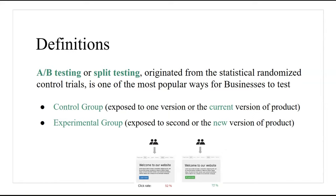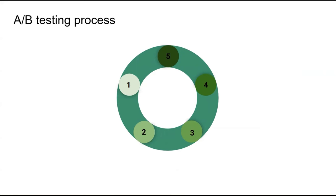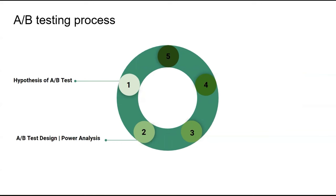Let's go through the steps included in the A/B testing process for a high-level overview. The first step is stating the hypothesis of the A/B test — coming up with a business and statistical hypothesis you would like to test, including how you measure success, which we call the primary metric. The next step is to perform a power analysis and design the entire test, which includes making assumptions about the most important parameters and calculating the minimum sample size required to claim statistical significance.